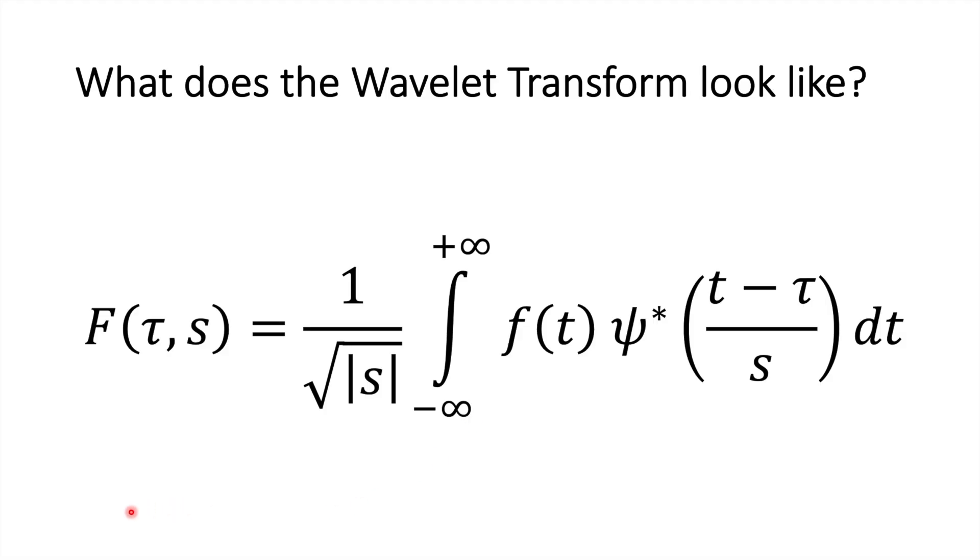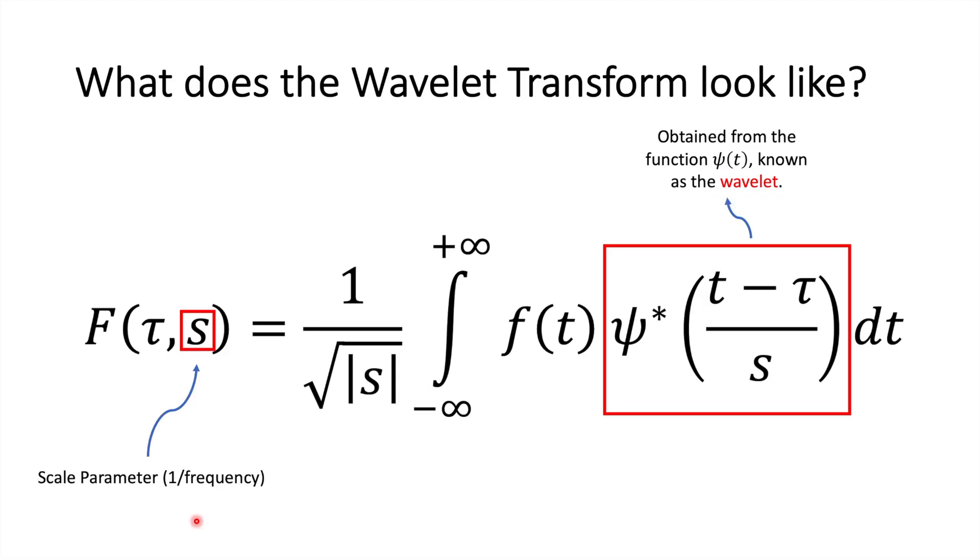So what does the wavelet transform look like? Here it is. It's an integral. It is the continuous wavelet transform. We still have our signal f of t, but this time it's not multiplied by an exponential. It's multiplied by the complex conjugate of psi. Psi is our wavelet, which we'll come onto in a minute. One of the parameters now is the scale parameter, which is 1 over frequency. So before we had tau and omega, but now we have the inverse of frequency, which replaces omega.